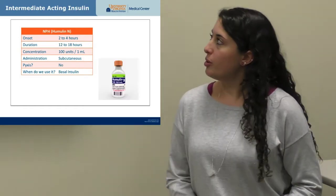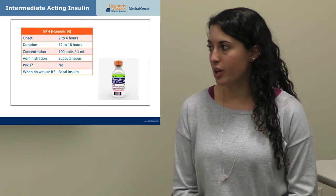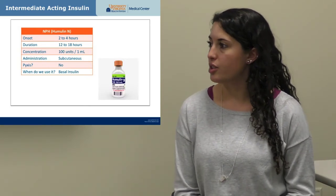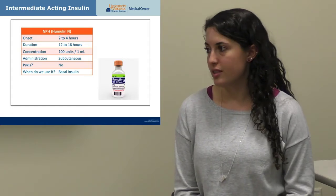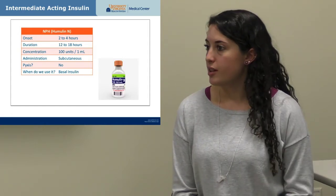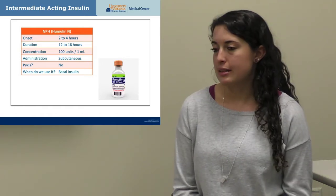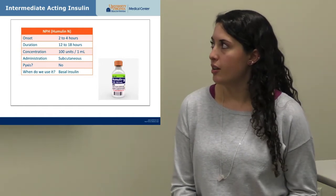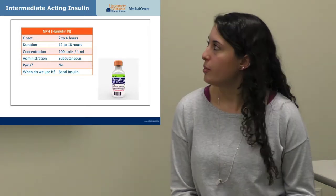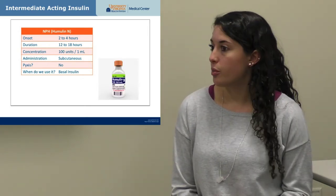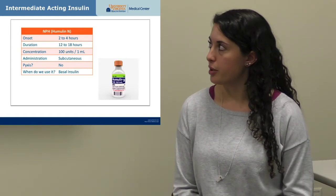Moving up, we have NPH, which takes about two to four hours to start working but lasts longer — covering about half to three-quarters of the day, so you may see twice-daily dosing orders. This is also subcutaneous and 100 units per mL. It's not kept in the Pyxis in the ED, so if ordered, it would come from the IV room already drawn up.